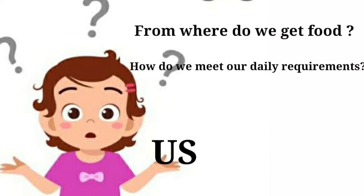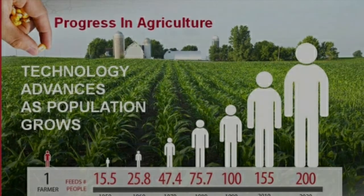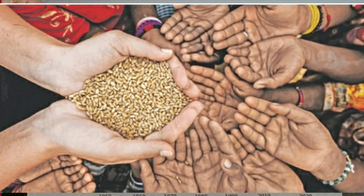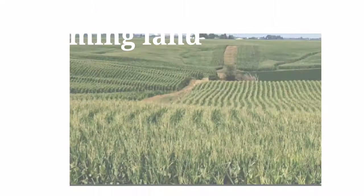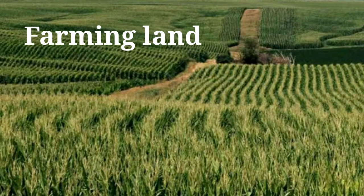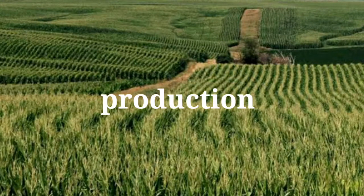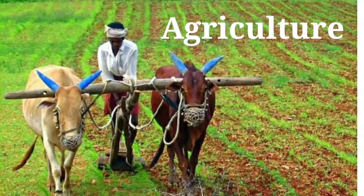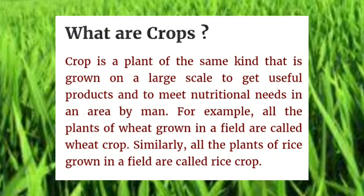Since the human population is increasing day by day, the food requirement is also increasing. Therefore it is necessary to increase the quantity of food produced to fulfill their increasing demand. The food requirement is achieved by farming more land, increasing land production, and by managing the production and distribution of food. Thus it is agriculture that makes it possible to sustain large production of crops.